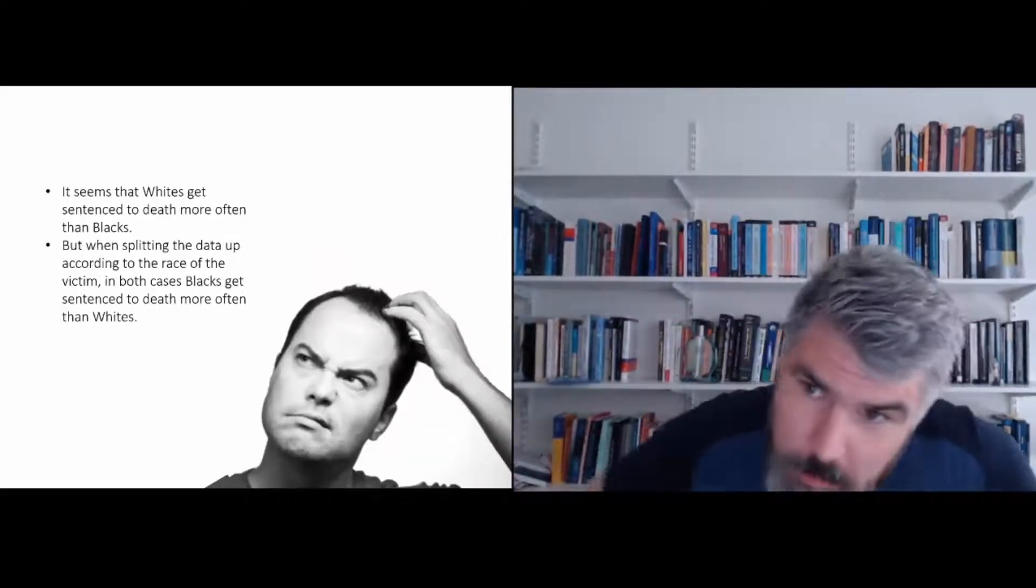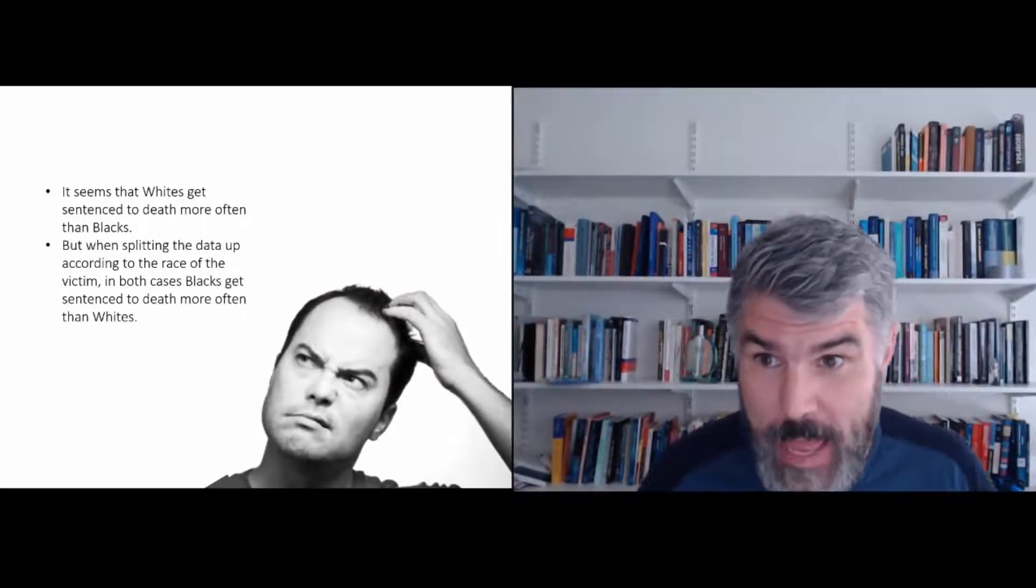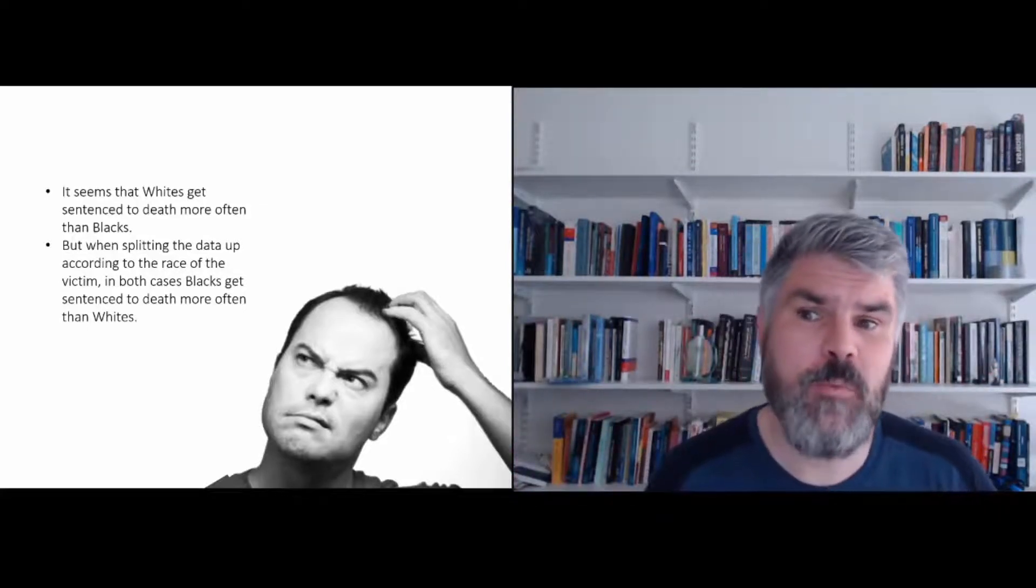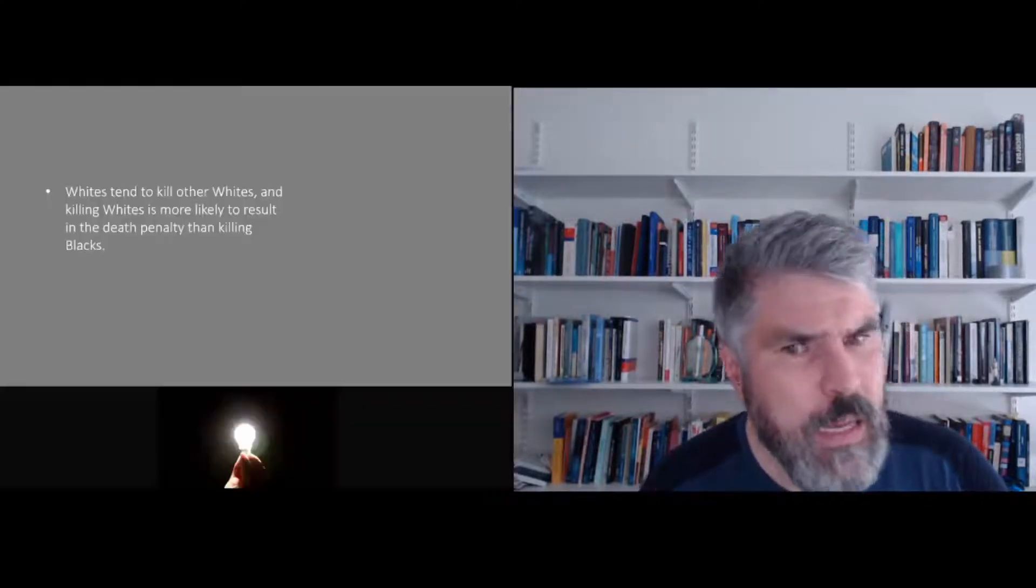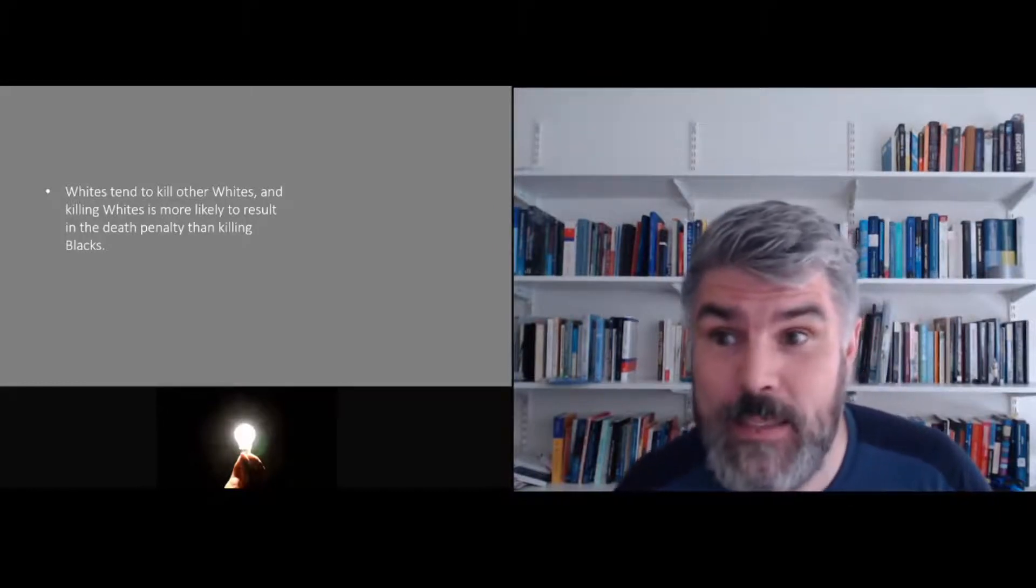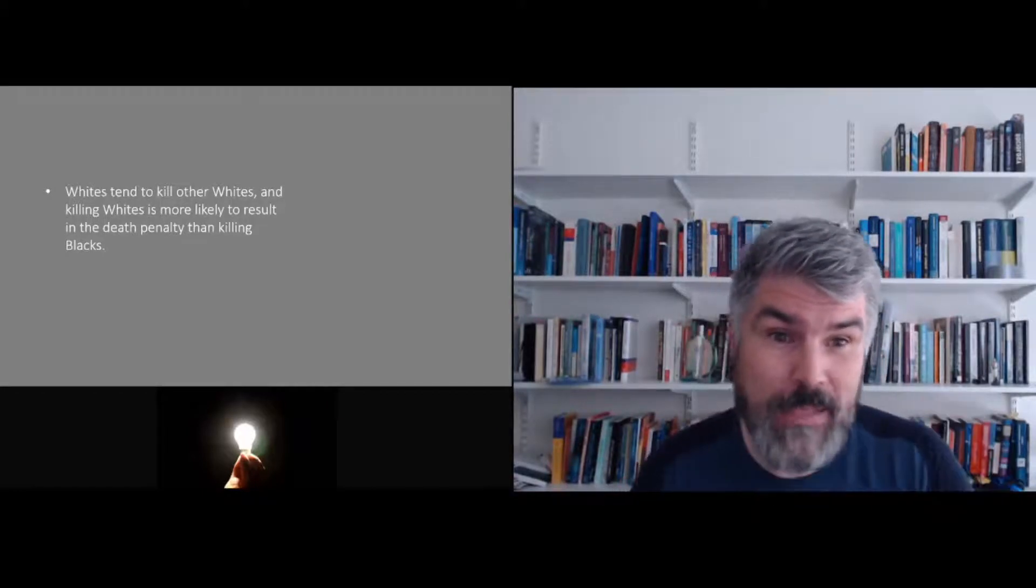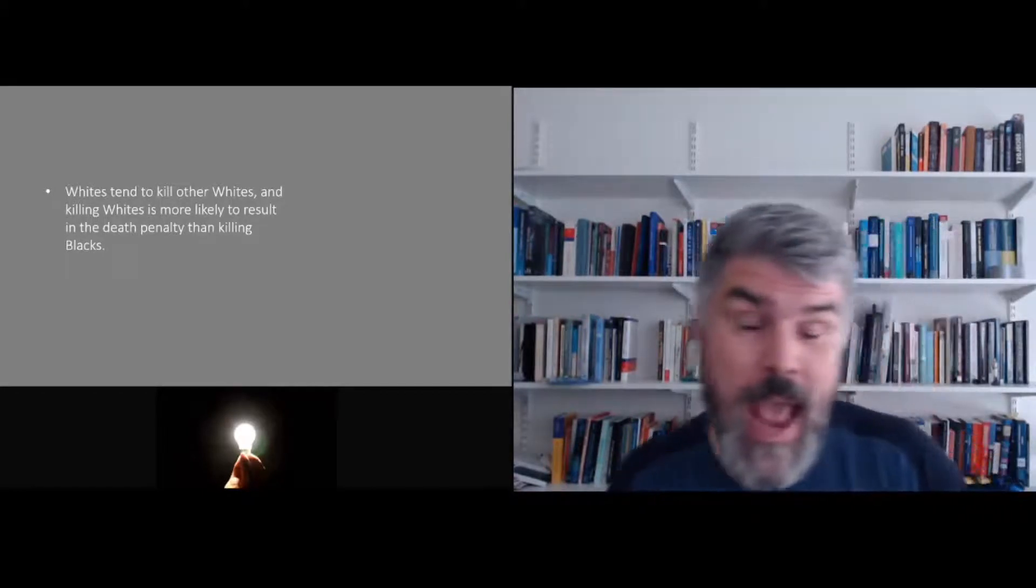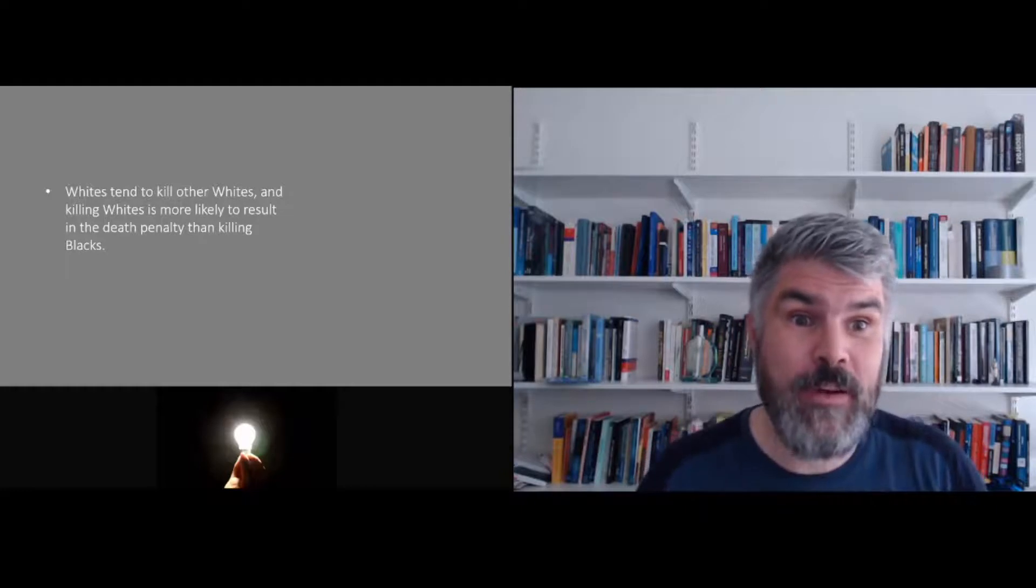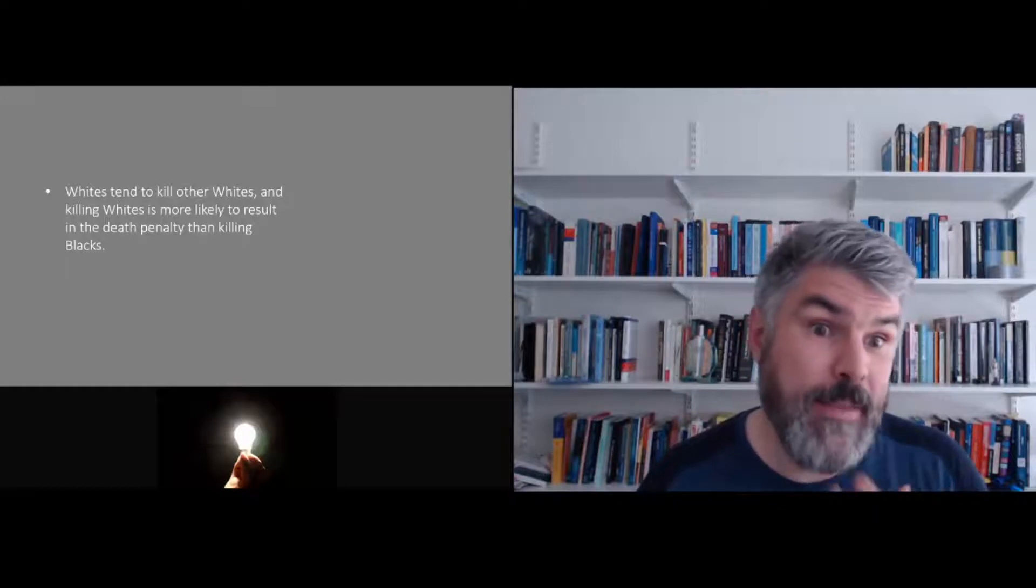So how can that be? That is a paradox. Well, it seems that whites get sentenced to death more often than blacks. But when splitting the data up according to the race of the victim, in both cases, blacks get sentenced to death more often than whites. As it turns out, whites back in the days tended to kill other whites. And killing whites was more likely to result in the death penalty than killing blacks. So blacks were more likely to kill black people. And killing a black person didn't lead as often to the death penalty as killing a white person. And that was behind this paradox.